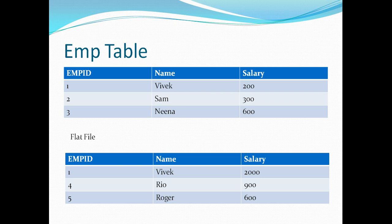This particular scenario can be easily handled using a conventional static lookup cache. As soon as we run the workflow in Informatica it will build the cache with three records — the details of Vivek, Sam, and Nina. It will identify that Vivek already exists and update his salary. For Rio and Roger it will not find records in the cache and will insert them. A straightforward, clean process — Employee ID is our primary key.